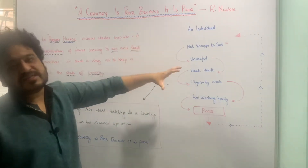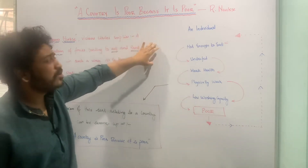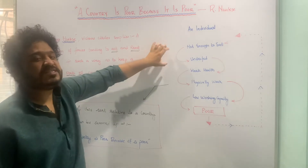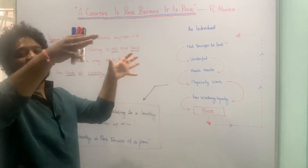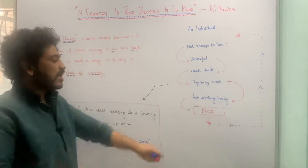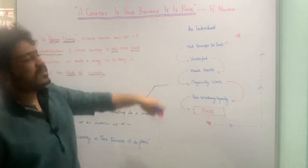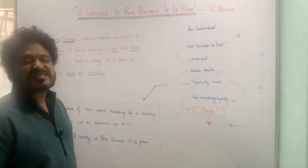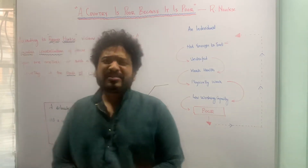This is how Nurkse justifies his statement that a country is poor because it is poor. I gave you an example of an individual, and then we saw that if these individuals are multiplied in large numbers and seen at a macro level — meaning all the individuals in that economy are poor — that means that country is poor. This is how Nurkse translates his idea.